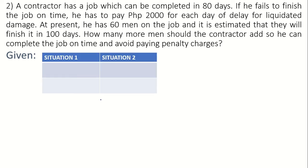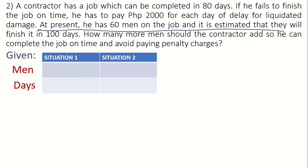Let's set up the table as our given. The quantities in situation one are from the same situation, and situation two quantities are from the different situation. The first row will be the number of men and the second row will be the number of days to finish the job. For situation one: he has 60 men, and they can finish the job in 100 days.